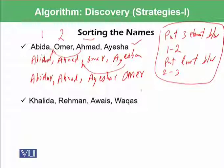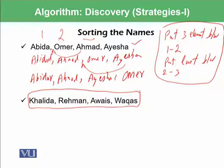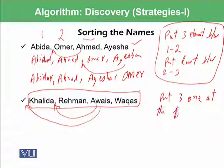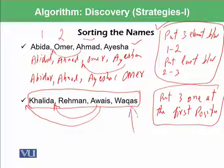However, the same algorithm cannot be applied when we have different input. For example, with the names Khalida, Rahman, Awais, and Waqas, we cannot put Awais between Khalida and Rahman because Awais should go before Khalida. This means to sort this list, you need to put the third element at the first position. So this algorithm cannot be applied to the next instance of the problem, and similarly there could be many other name combinations where it fails.